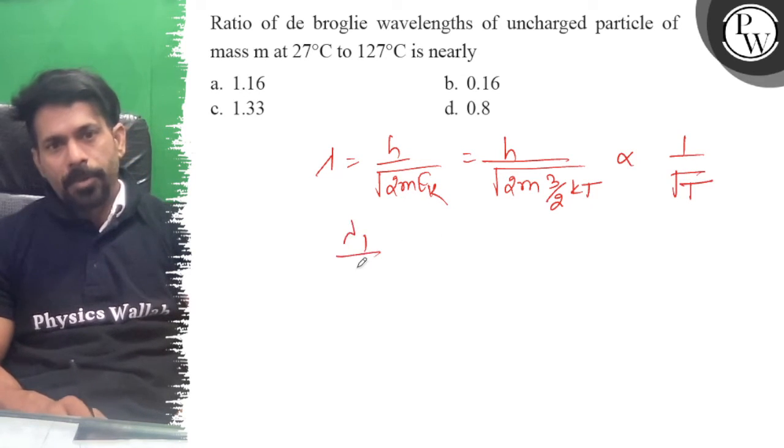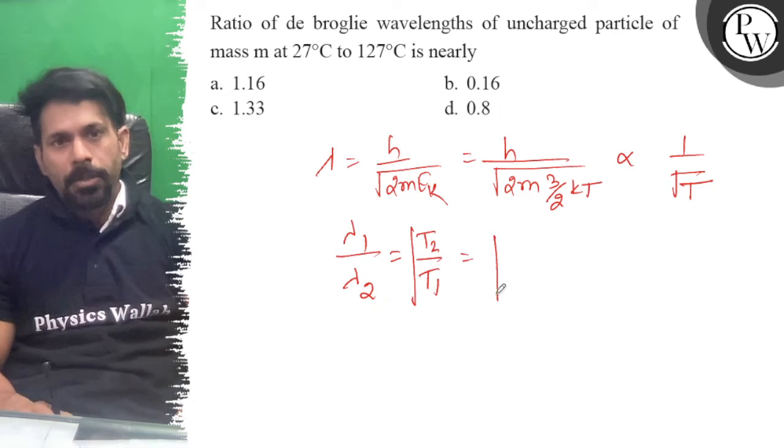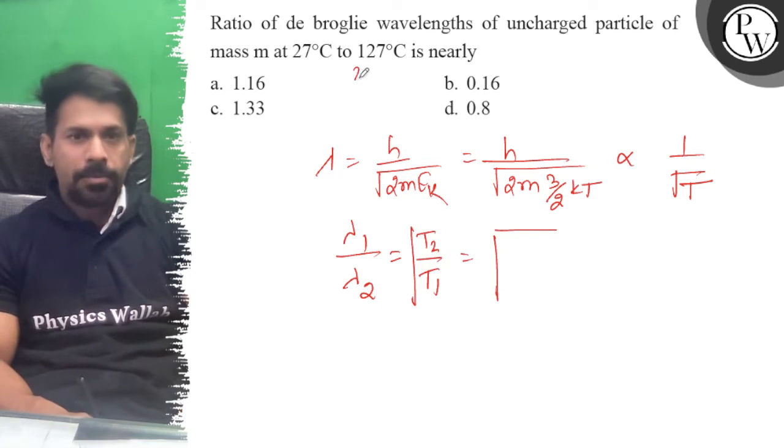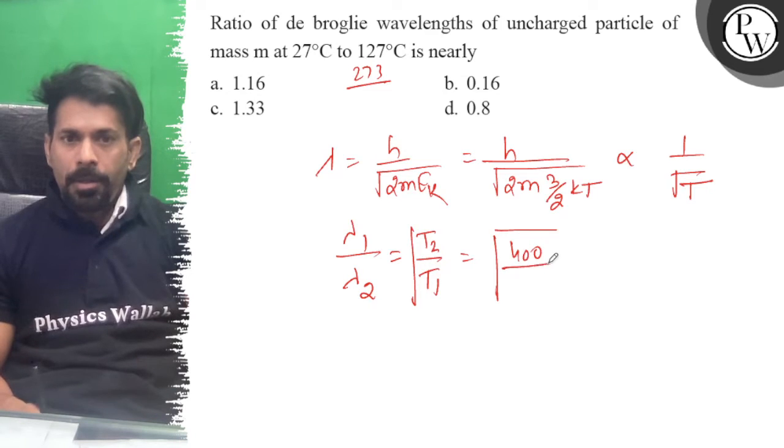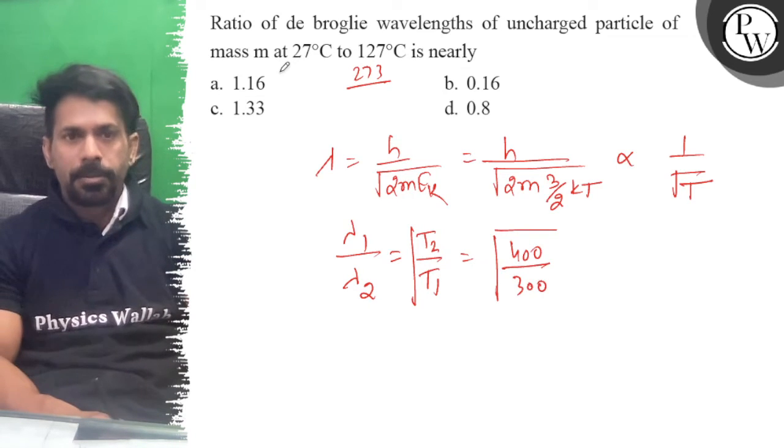Lambda 1 upon lambda 2 is equal to root of T2 upon T1. T2 is 127 plus 273, that will be 400 upon 300, 273.